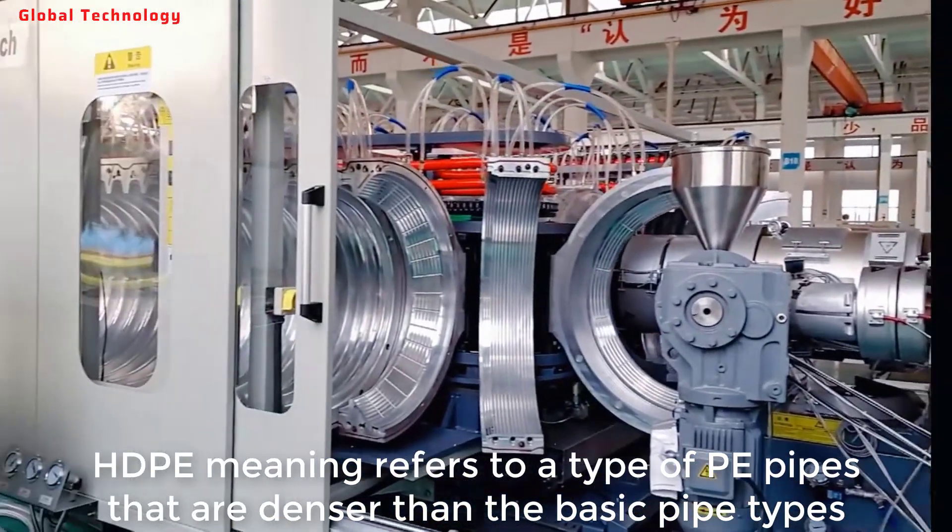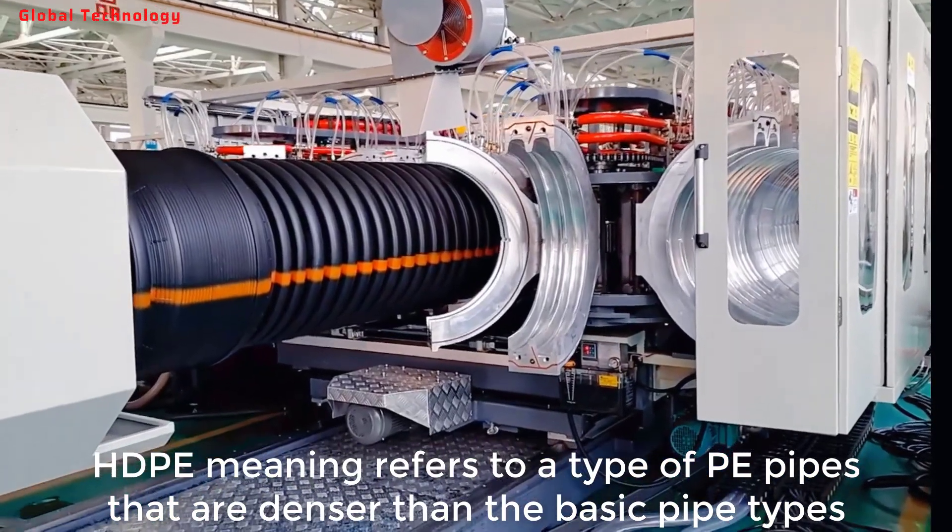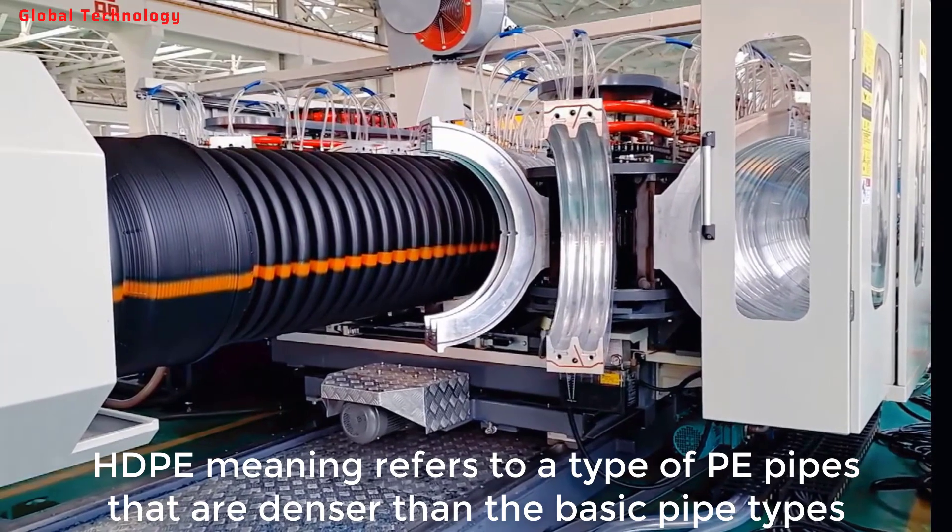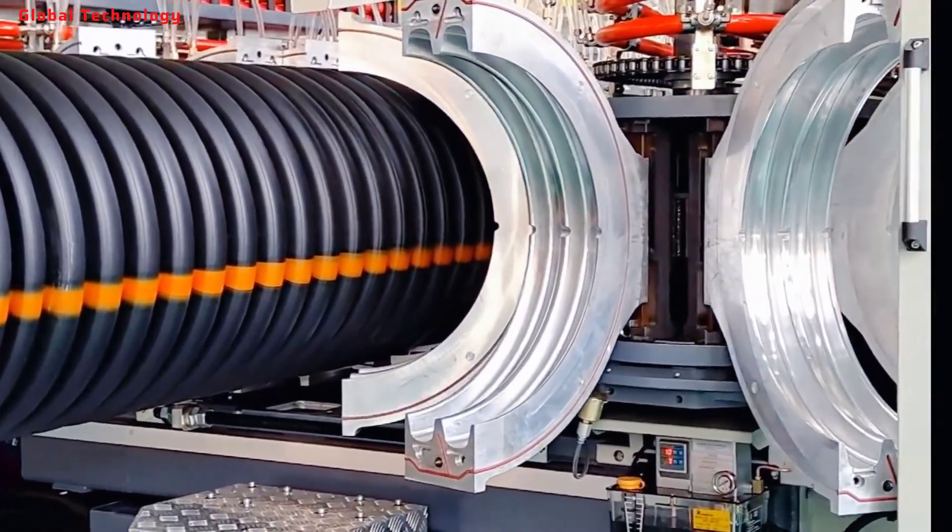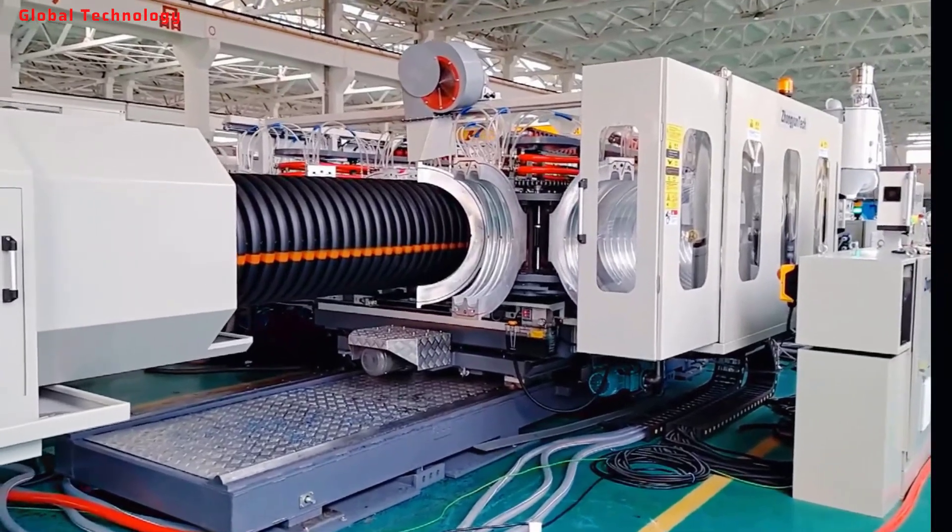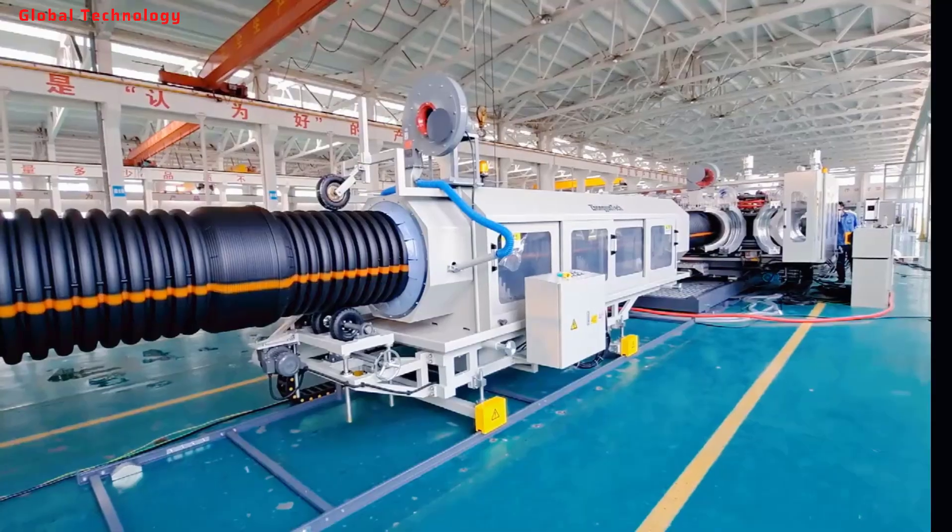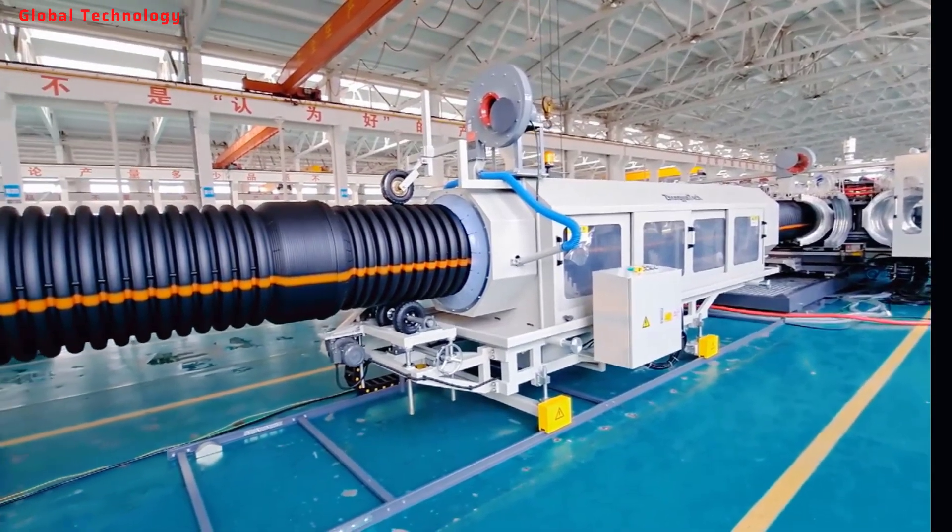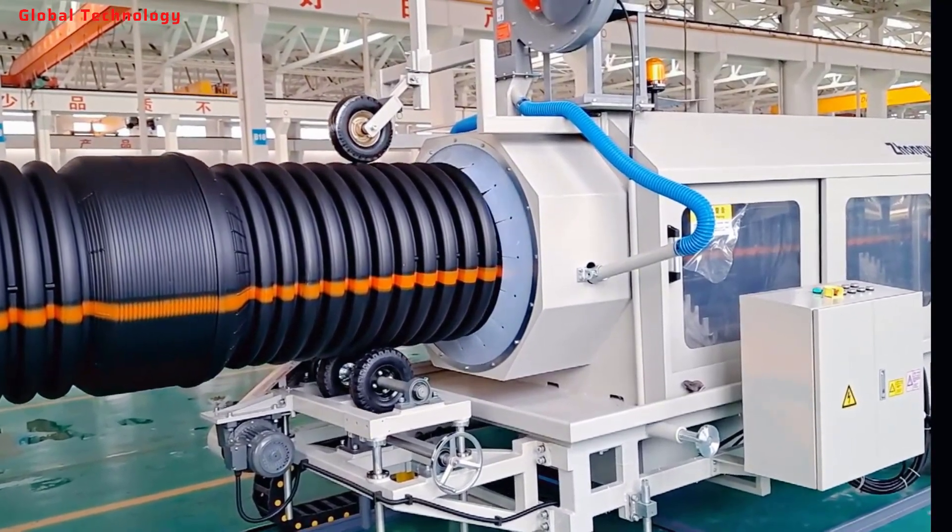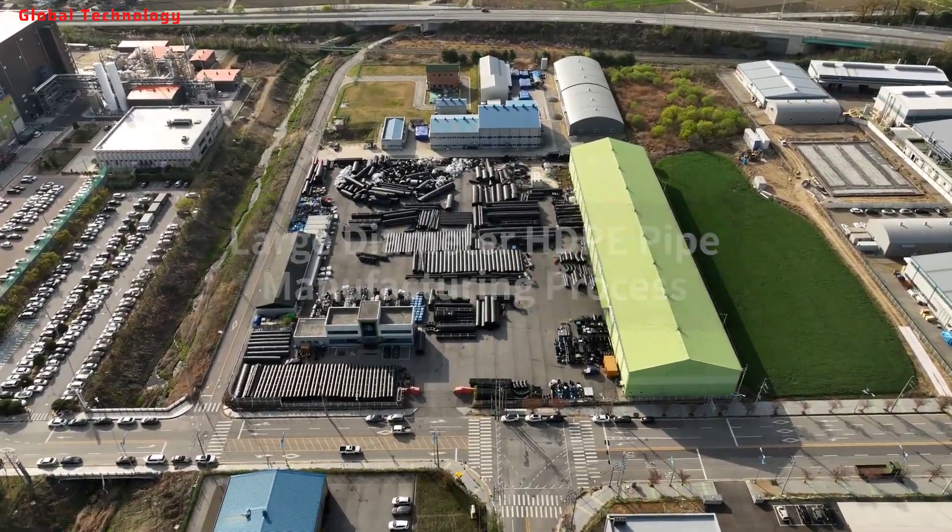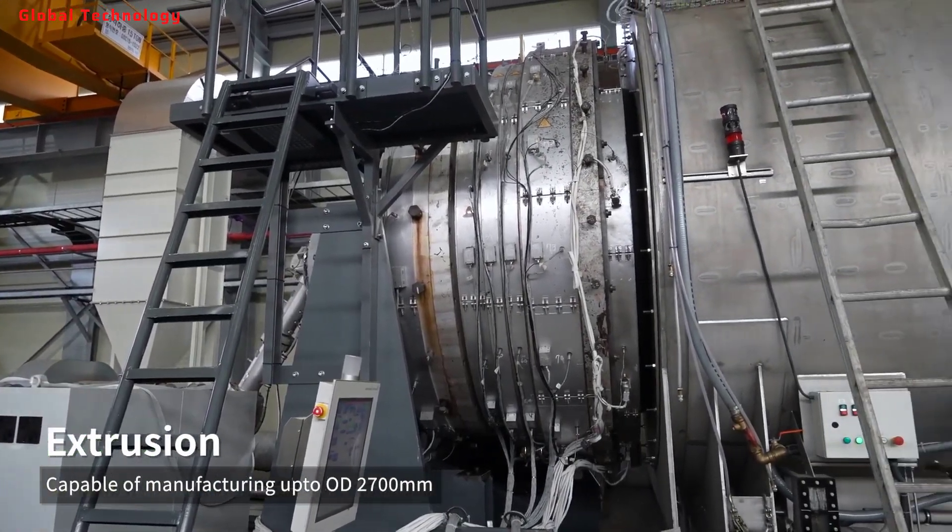HDPE meaning refers to a type of PE pipes that are denser than the basic pipe types. Unlike ordinary PE pipes, HDPE pipes are rust resistant and trigger internal pressure resistance for reliable use. HDPE pipes are less flexible than ordinary samples because they come with high melting and impact points. During manufacturing, companies may add carbon black or other colors to HDPE pipes for UV resistance.